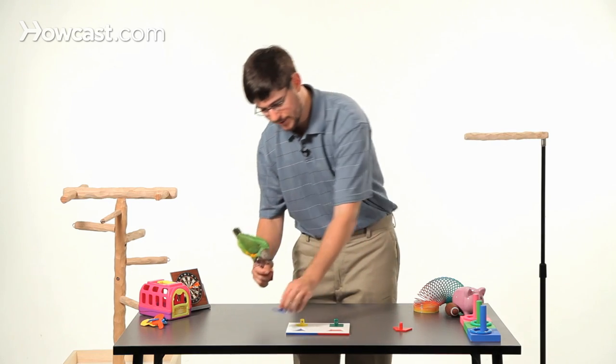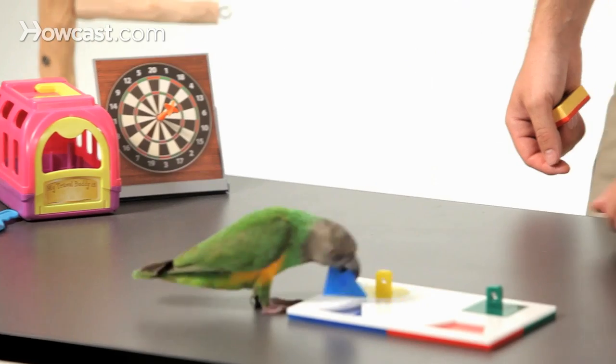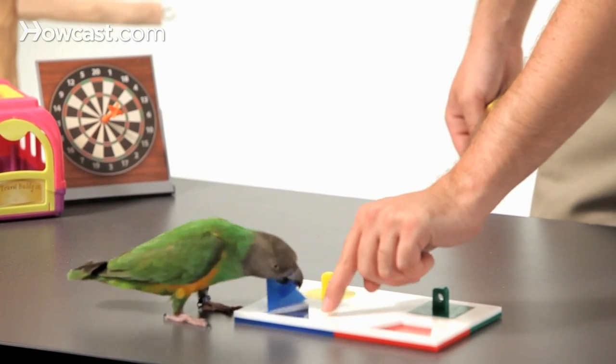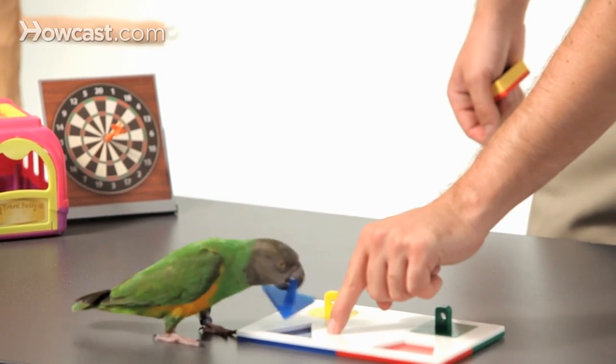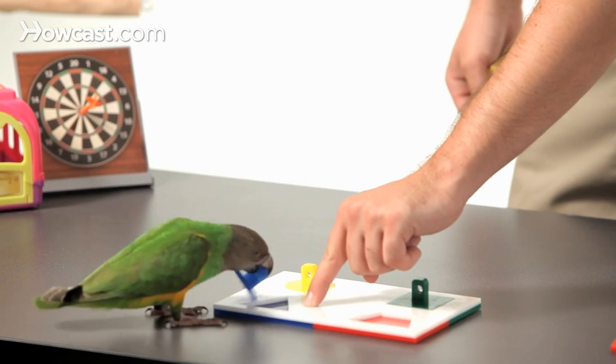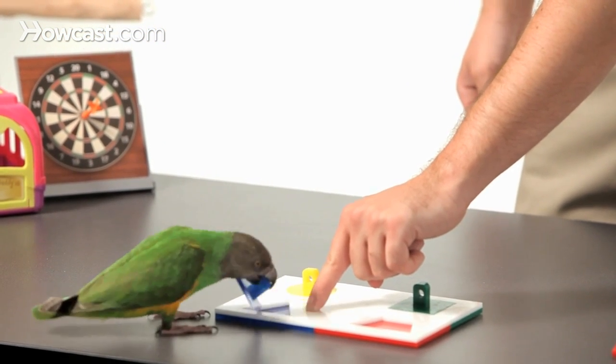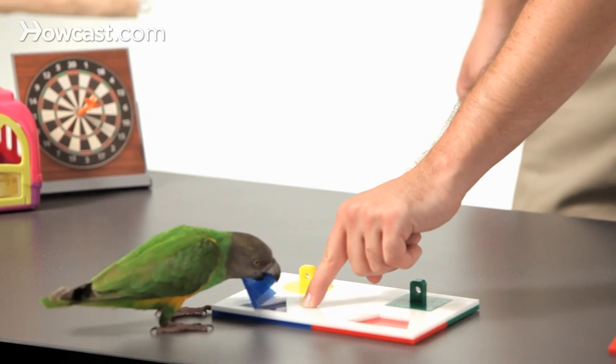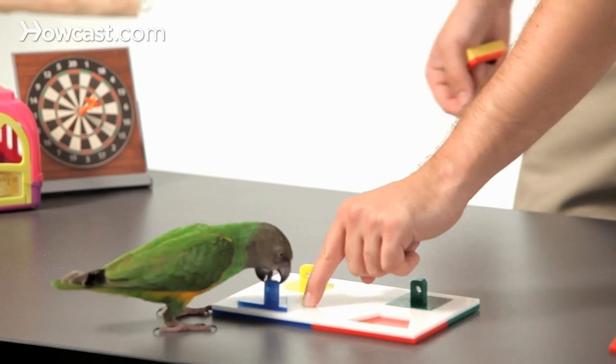So once they know the square and the circle, you can teach them to do the triangle. They have to turn it one of three ways to get it into the slot. Fetch. When they're not getting it in, you don't click. And if they miss, then you take it away or they're going to keep trying. Fetch. Good bird.